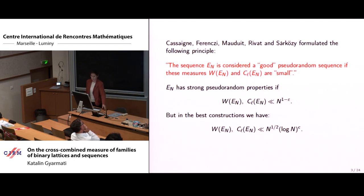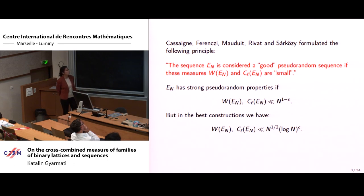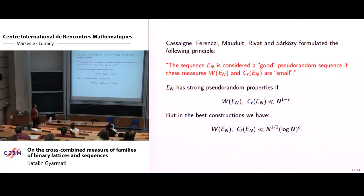The well-distribution measure studies the frequencies of minus one and plus one in arithmetic progressions. The correlation measure studies the connection between certain elements of the sequence. A sequence is considered a good pseudorandom sequence if these measures are small — as stated by Cassaigne, Ferenczi, Mauduit, Rivat, and Sárközy — and applications showed that a sequence is good if these measures are smaller than n to the power one minus epsilon.